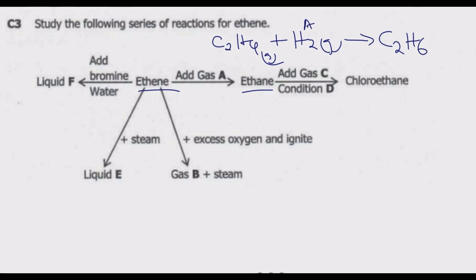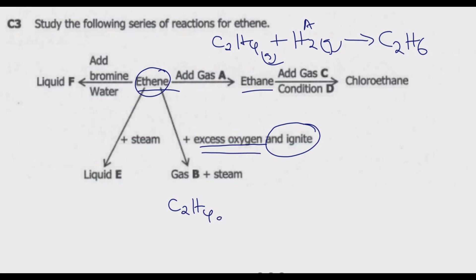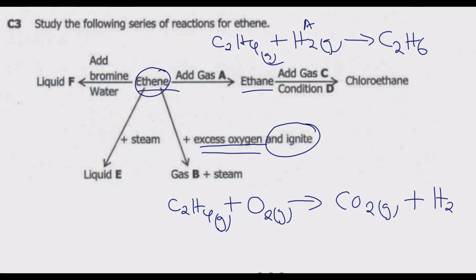Now let's identify gas B. Ethane is reacted with excess oxygen and ignited — we are burning ethane — and we get gas B and steam. As a property of all alkanes, they burn in plenty of oxygen to form carbon dioxide and water. The equation is: C₂H₄ (gas) + excess O₂ → CO₂ (gas) + H₂O (steam). So gas B is carbon dioxide.